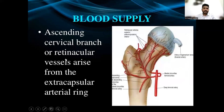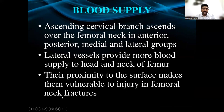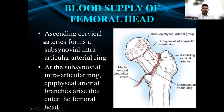The ascending cervical branches or retinacular vessels arise from the extracapsular arterial ring. They ascend over the femoral neck in anterior, posterior, medial, and lateral groups. The lateral vessels provide more blood supply to the head and neck of the femur. Their proximity to the surface makes them vulnerable to injury in femoral neck fractures.